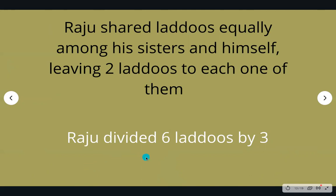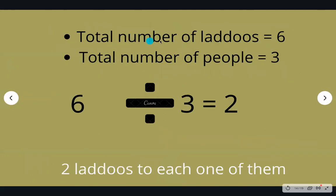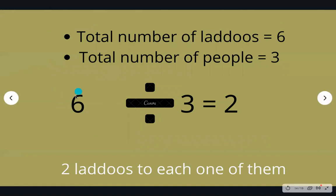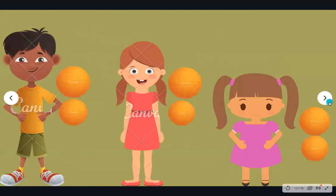So Raju basically divided these six laddus by three. Raju ne chai laddu ko divide kar diya teen logon ke beech mein — apne beech mein aur apni dono beheno Reena aur Meena ke beech mein. Total number of laddus were six, and total number of people were three. Six divided by three equals two, leaving two laddus to each one of them. As you can see, Raju has two laddus, Reena has two laddus, and Meena has two laddus.